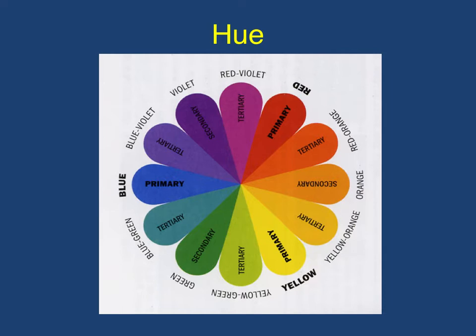After the primary colors, we have the secondary colors: green, purple, and orange. These are made from equal parts of the primary colors. Orange is half yellow, half red. Purple is half blue, half red. Green is half blue, half yellow. We also have what's called the tertiary hues — these are hues that are more of one color than the other. For example, yellow-orange: there's more yellow in this than there is red, making it yellow-orange.